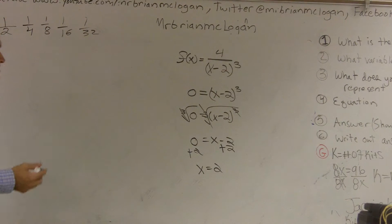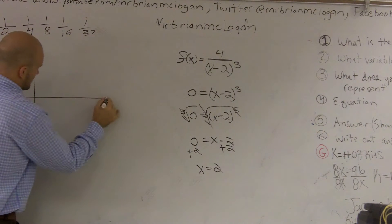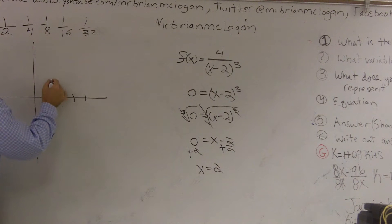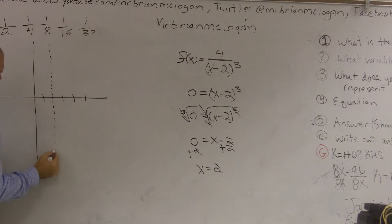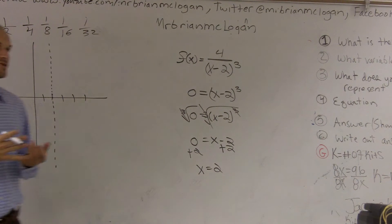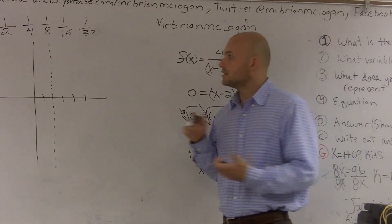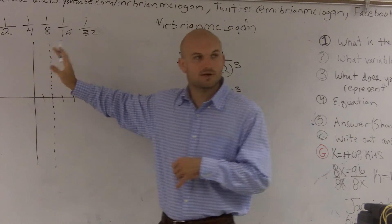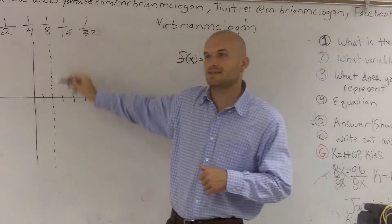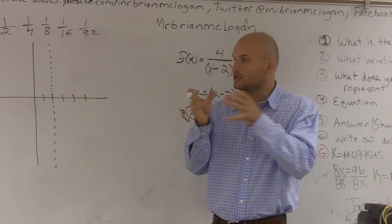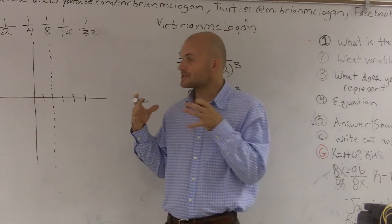So X equals two is my vertical asymptote. When I show this on a graph, it's going to be a nice dotted line. Our vertical asymptote is a line that our function is going to approach — either positive infinity or negative infinity — but it's never actually going to cross or touch the asymptote. It's a line they go toward but never actually touch or cross.